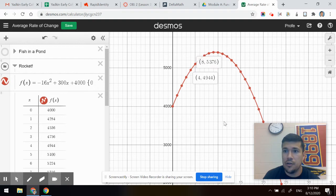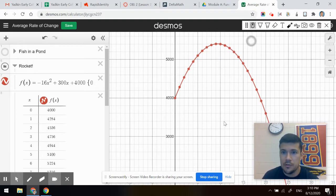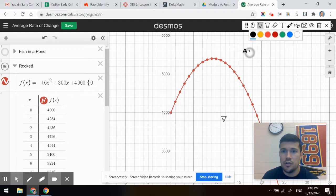So let's say I wanted to find the average rate of change from four to eight. If we were finding the average rate of change from X equals four to X equals eight, once again, change of Y over change in X.